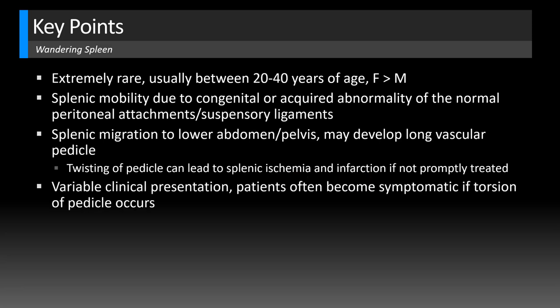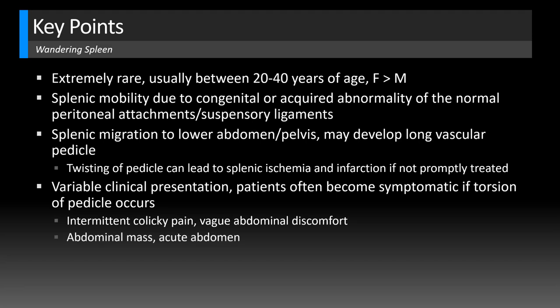The clinical presentation is quite variable. Patients might become symptomatic if torsion of the pedicle occurs and may present with intermittent colicky pain or vague abdominal discomfort. Sometimes the abdominal mass is actually palpable, and if there's infarction, patients may have acute abdomen symptoms. This can mimic other causes of lower quadrant pain like acute appendicitis or ovarian torsion.